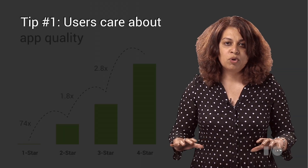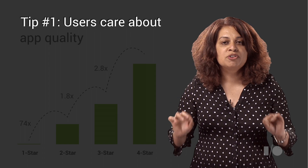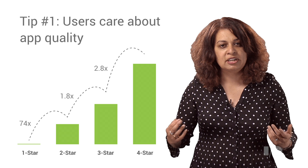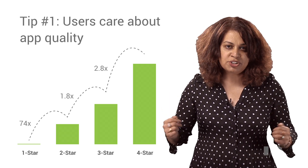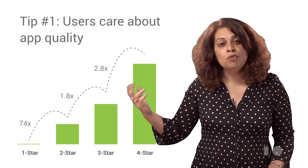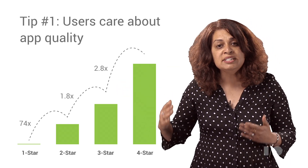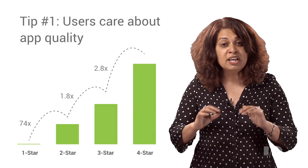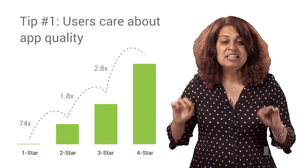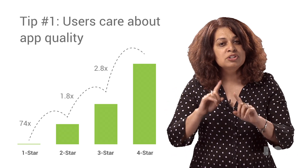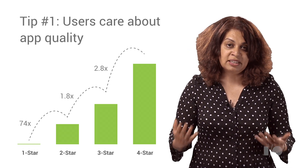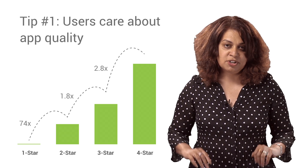Tip number one: users will pay for quality, so get testers to submit ratings and reviews early. One of the primary metrics that users judge an app with is quality, and they use the app star rating to measure quality. When the star rating increases, the purchase rate increases — four-star apps earn almost three times what three-star apps are earning. So to make sure that your app's quality is reflected in the rating, ask early evaluators of your app, especially educators, to submit their ratings and reviews. Teachers really care about what other teachers specifically think about an app, because that is a big factor in their purchase decision.